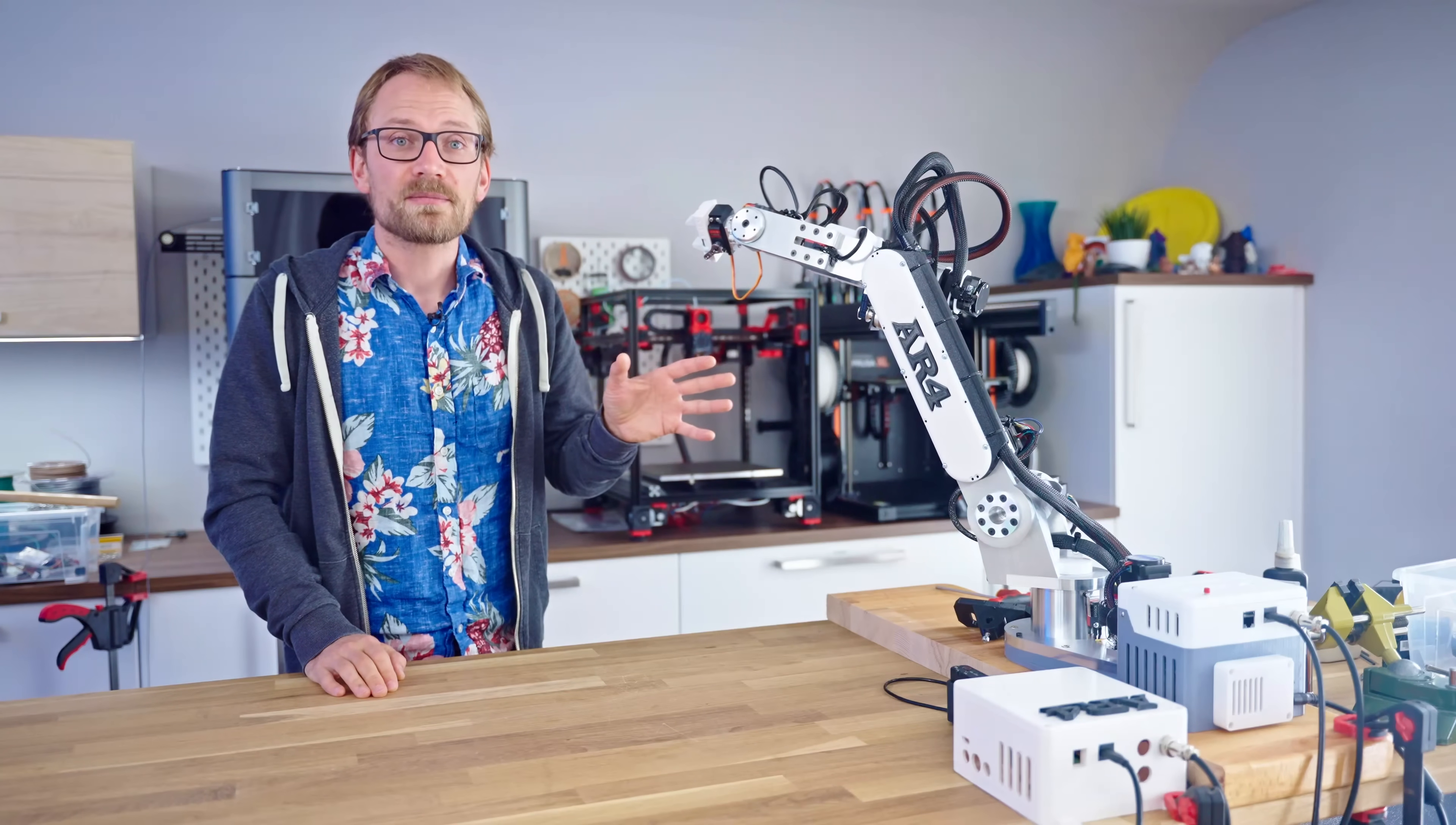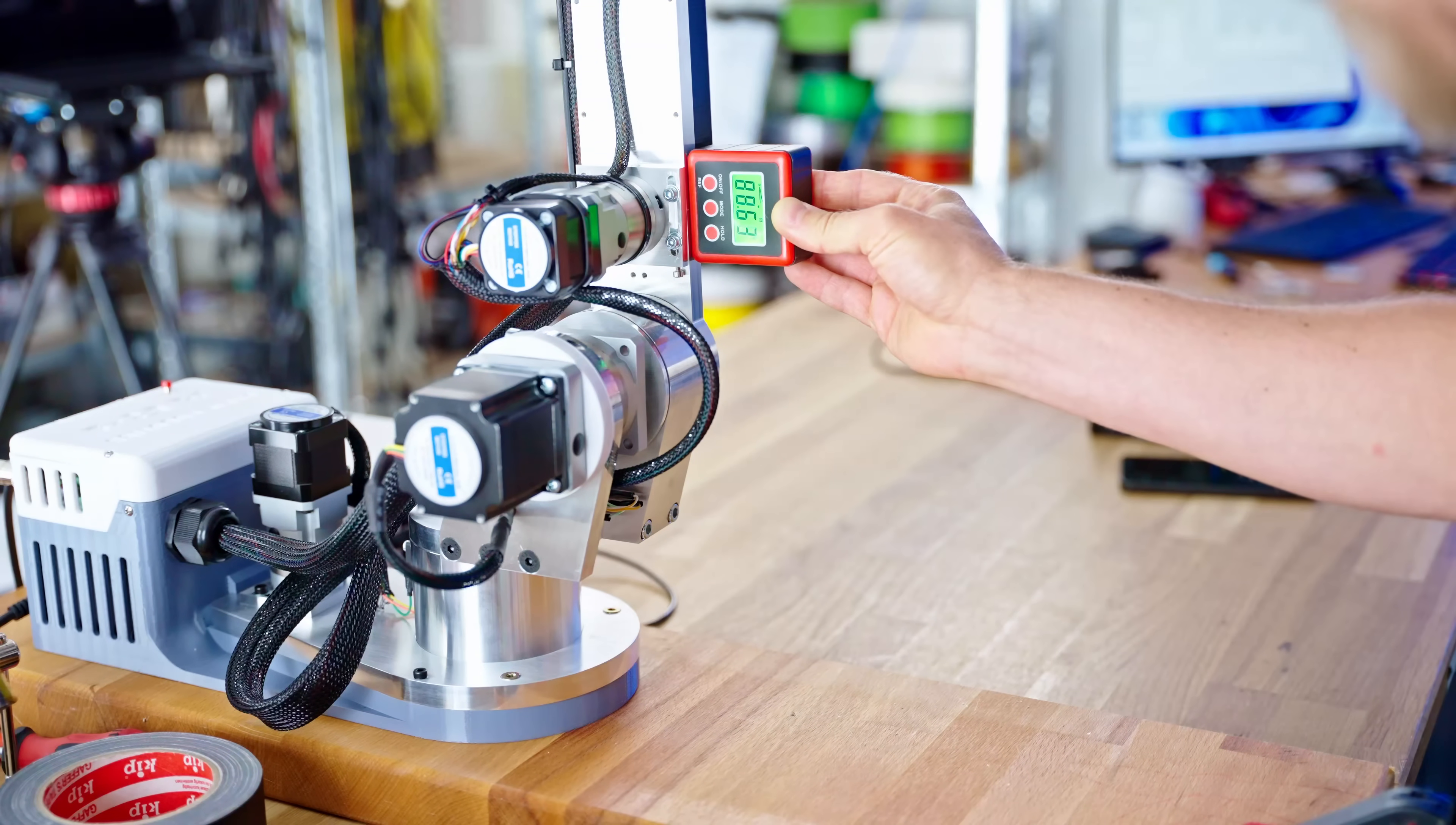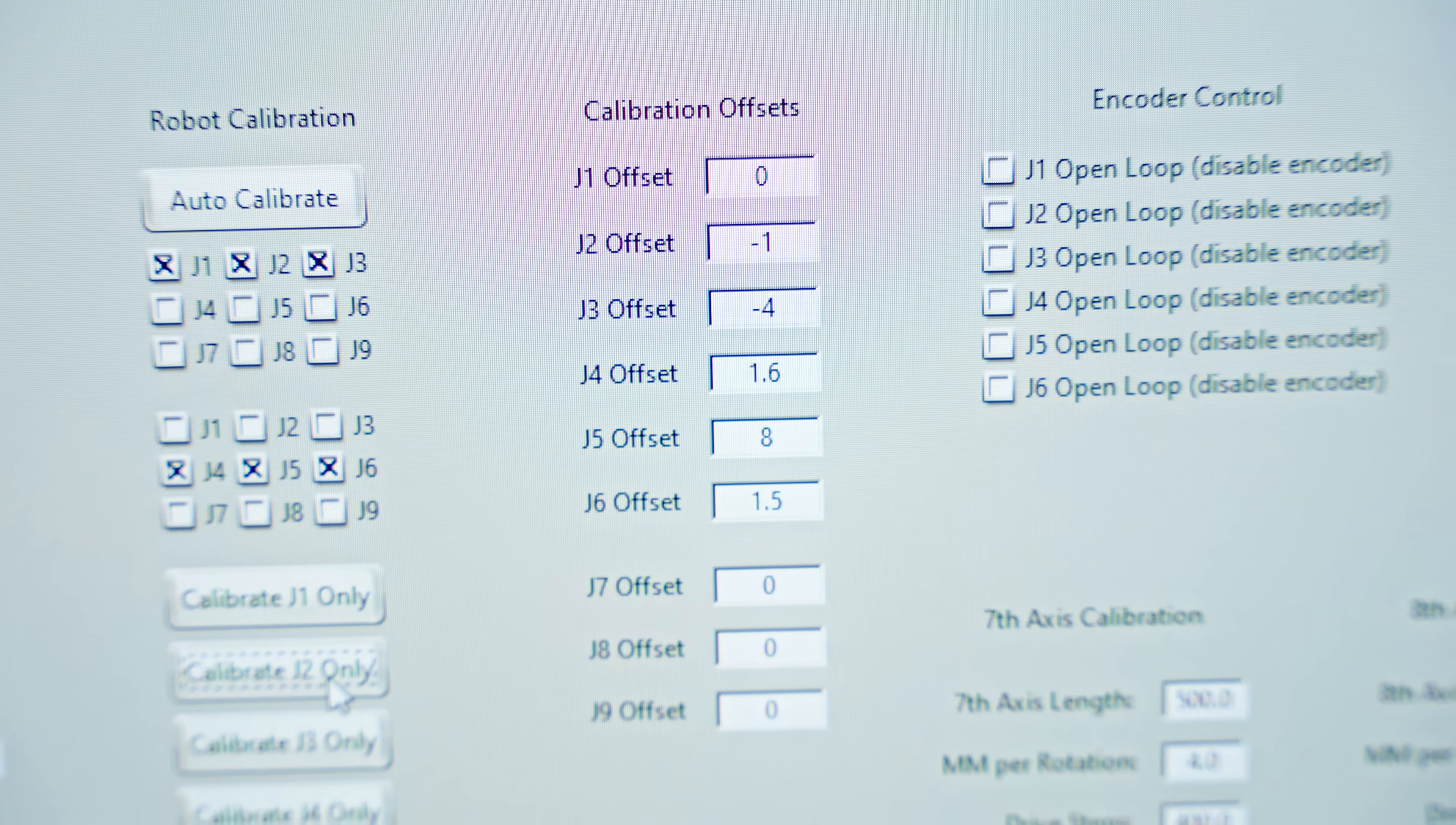And with that all fixed, you calibrate the end stop offsets by measuring the actual angles it parks at, and after that we can start programming some routines.